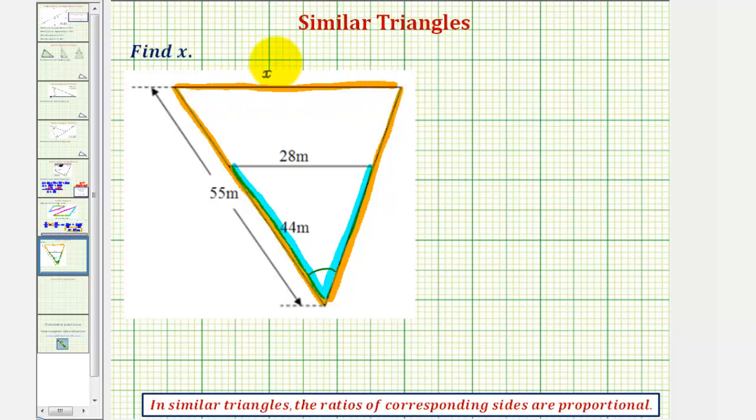We're trying to find the length of x. Notice how side x here corresponds to this side here with a length of 28 meters. So to begin setting up the proportion, we would have x is to 28 must equal—notice how this ratio compares the length of one side of the large triangle to the small triangle. So this next ratio must also compare the large triangle to the small triangle.